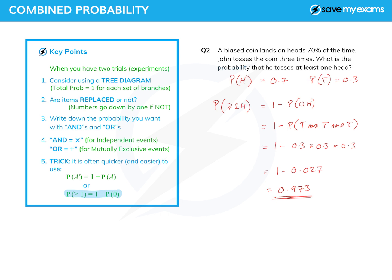And if I do that, I get one minus 0.027, which is 0.973. So it's very likely I will get at least one head, which you would expect because it's biased towards heads. Now, I know that these probability questions do get harder. And there is another tutorial with some much harder questions in it. So you might want to have a look at that too.